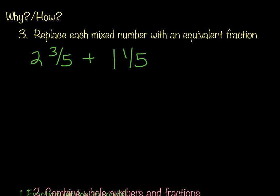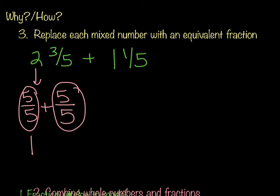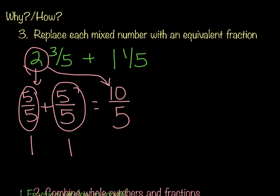So let's look at our third method, which is replace each mixed number with an equivalent fraction. So if you think about the mixed number 2 and 3 fifths, that would be 2 wholes of 5. So 2 is actually equal to 5 fifths and 5 fifths, because we have the whole number 2. Remember, 5 fifths is equal to 1 whole, and 5 fifths is equal to 1 whole. So that's how I'm getting that. Then what we're going to do is we're going to take our original fractions, and we're going to add those. So we're going to make this into 10 fifths.